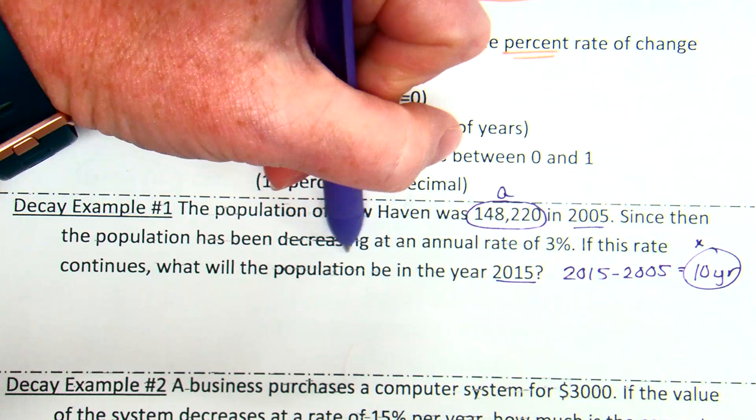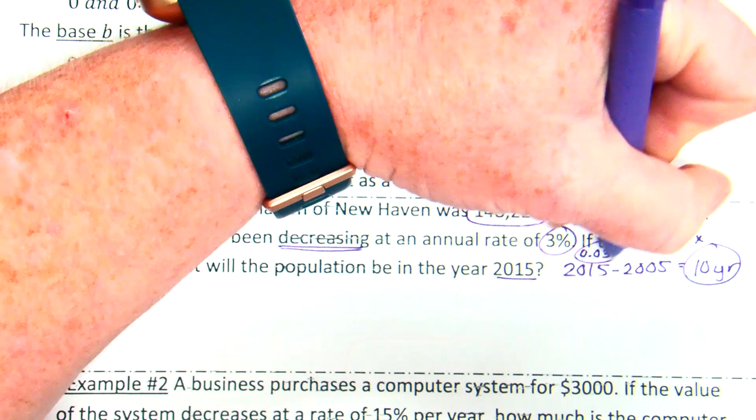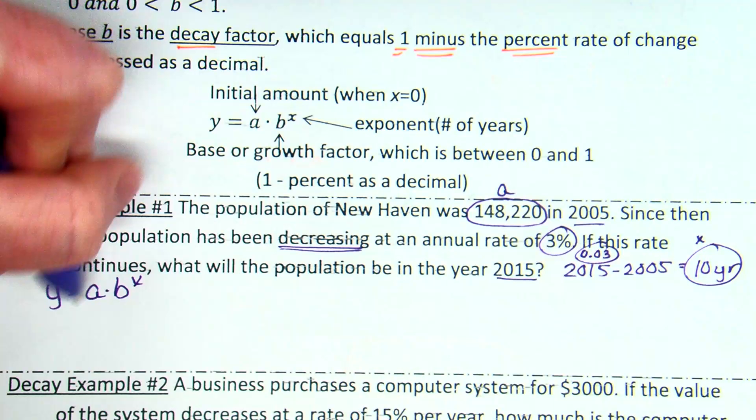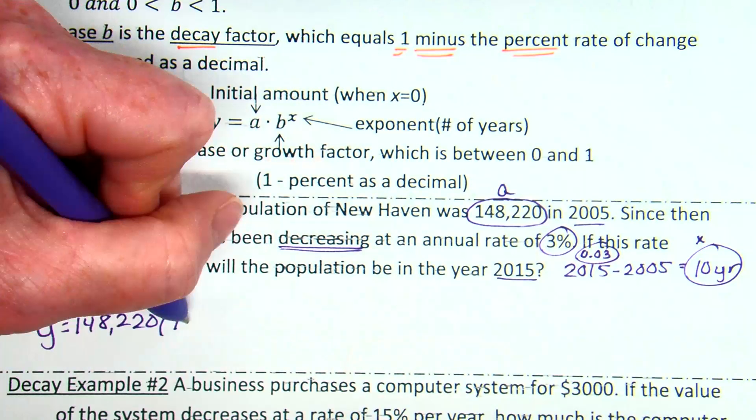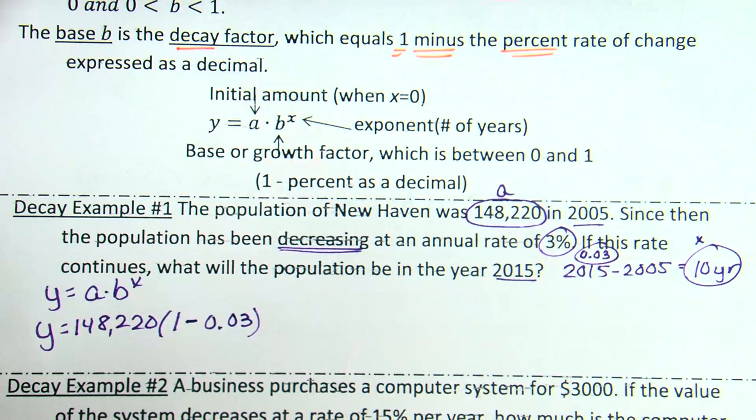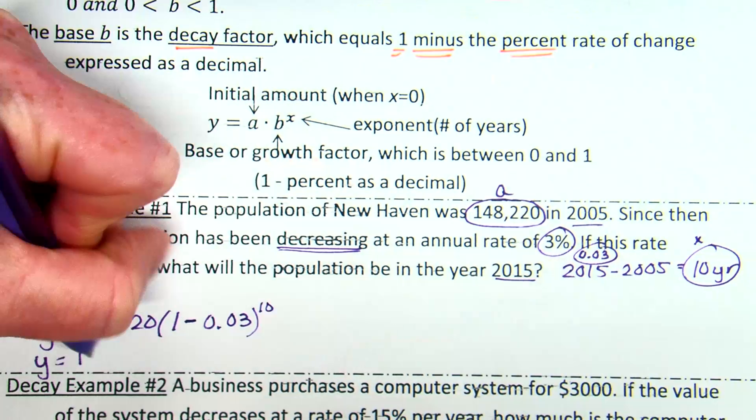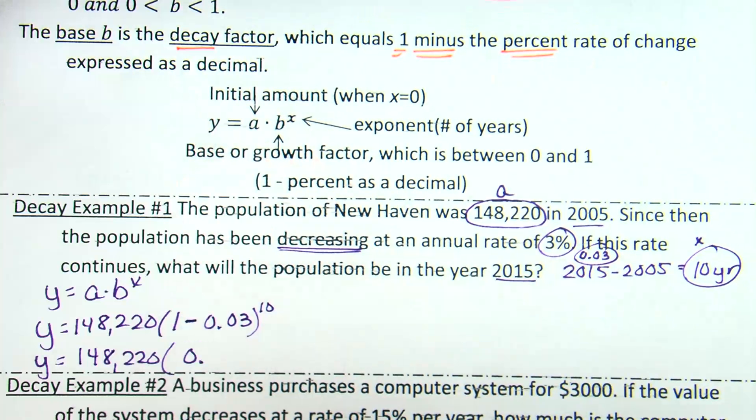Okay. I'm going to use that same setup. Y equals A times B to the X. A. Initial value. 148,220. Times 1. This time it's decreasing. So, if we're decreasing, the big difference is minus. And it's going to be 1 minus 0.03, the percent. Raised to the power of... How many years? 10. So, if I clean this up a little bit. 148,220 times... What is 1 minus 0.03? Think 100 minus 3. 97. 0.97. 0.97 raised to the 10th.